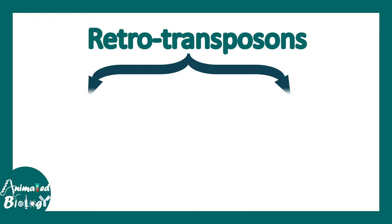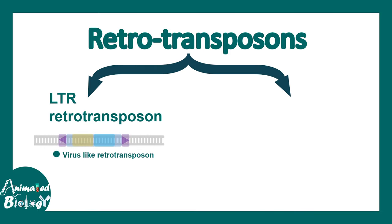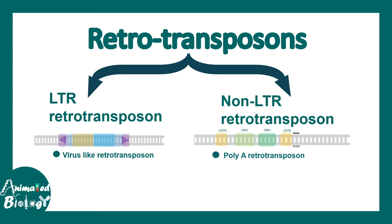Retrotransposons are broadly classified into two groups: the LTR retrotransposon and the non-LTR retrotransposon. The LTR retrotransposons are virus-like retrotransposons, so they are pretty much like a retrovirus. The non-LTR retrotransposons are very different — they don't have LTRs but they do have a poly-A tail, making them more similar to a eukaryotic gene.